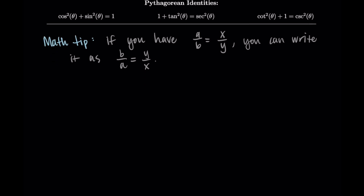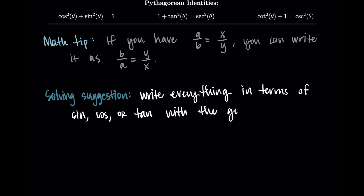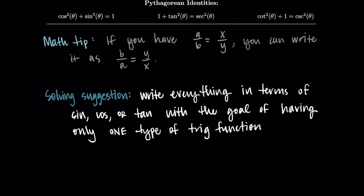Before we get to the example, I want to give one suggestion. As you're solving these, I recommend trying to write everything in terms of sine, cosine, or tangent, with the goal of only using one type of trig function in the equation. This might not always work, but it's a good standard approach. If you have a mixed set of trig functions, try to get them all the same — all sine, all cosine, or all tangent.